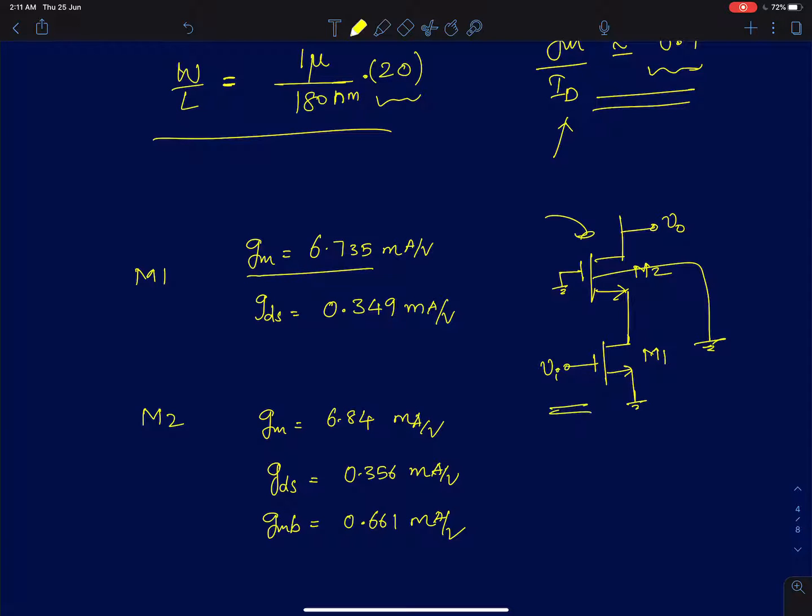These are the DC operating parameters. I obtained these results from a DC simulation. The gm of this first device is 6.7 and gds which is 1 by r0 is 0.35, again milliampere per volt. For the second device however in the simulation the bulk terminal is actually connected to ground. The source and bulk are not shorted. So I have also reported gmb for it. So gm and gds are very very close because the bulk is not shorted to source. The VT is different and the VGS is also different. So you get a slightly different gm and gds, very very slight change.